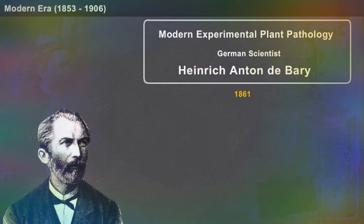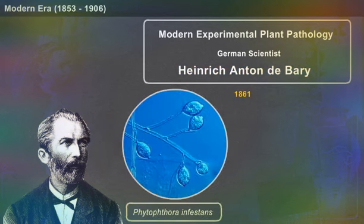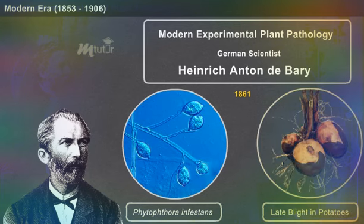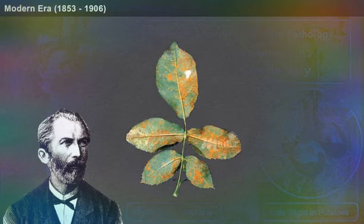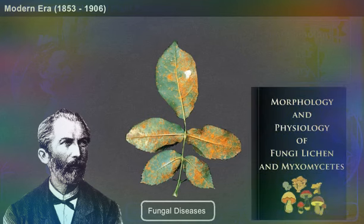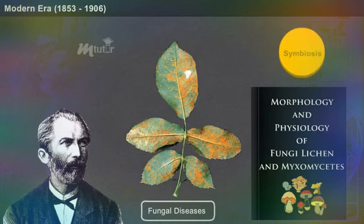The foundation of modern experimental plant pathology was laid by the German scientist Heinrich Anton de Bary. In 1861, he experimentally proved that Phytophthora infestans was the cause of late blight disease in potatoes. He also made an extensive study on fungal diseases and wrote the book Morphology and Physiology of Fungi, Lichens, and Myxomycetes. The term symbiosis was also coined by Heinrich.